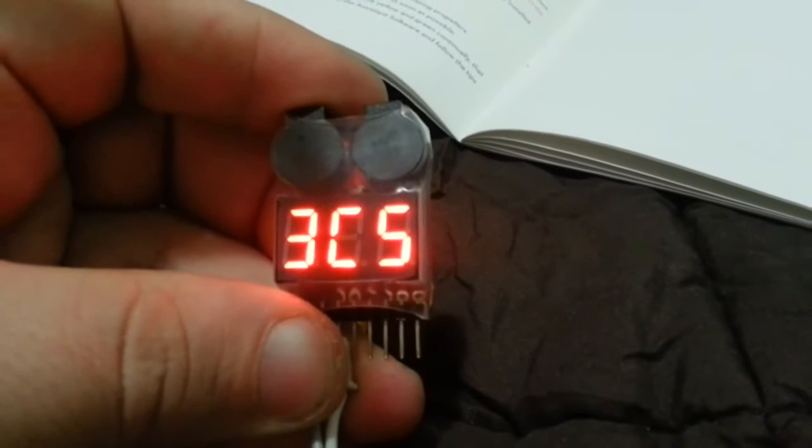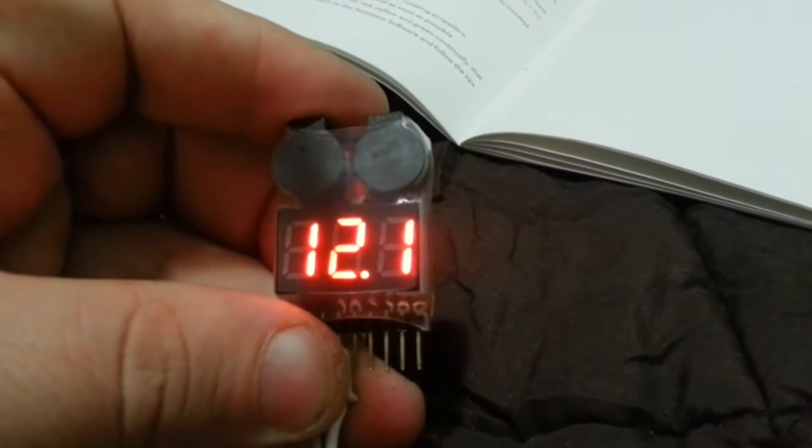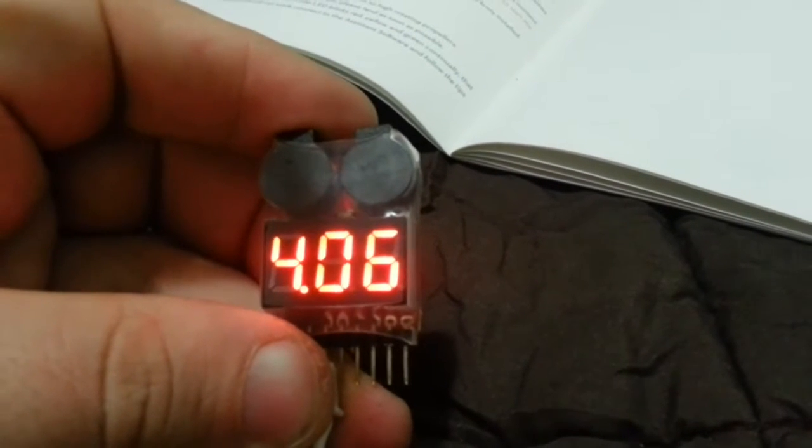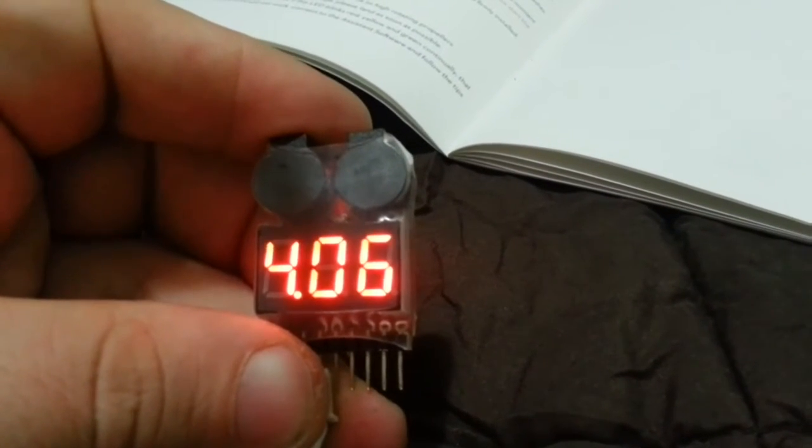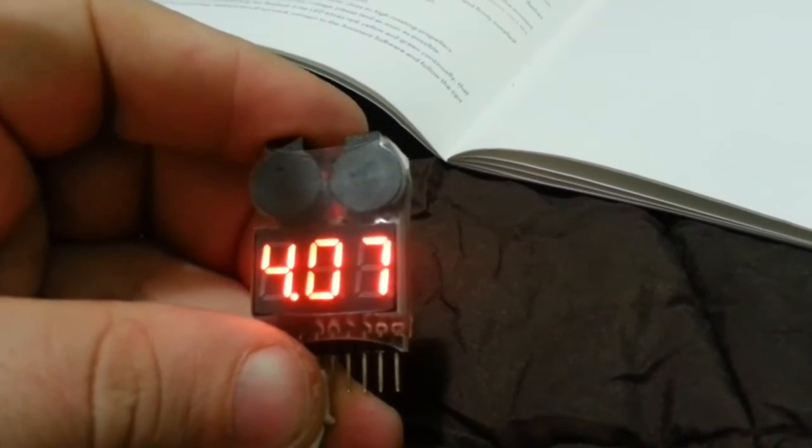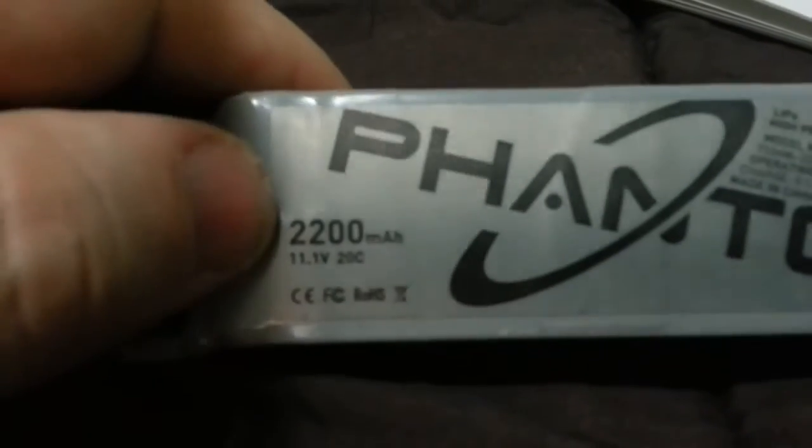So there we go, 3S battery, all cells. It's a total of 12.1. Number one's 4.7 volts, number 2 is 4.6 volts, and 4.6 on the 3rd cell. So I know this one's already charged, because obviously the voltage on these is 11.1, so this is well and truly charged.